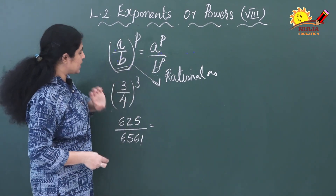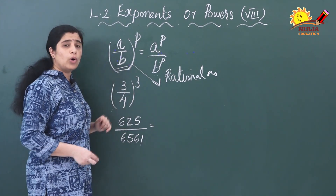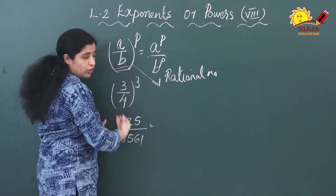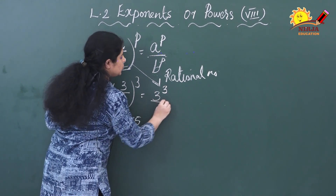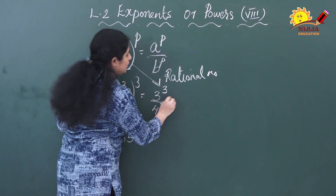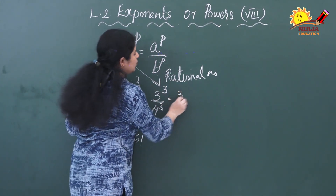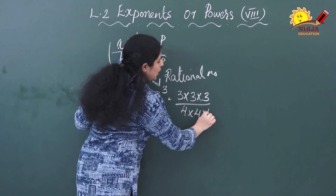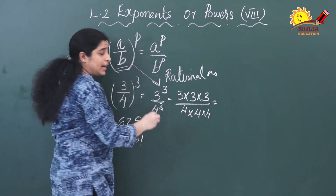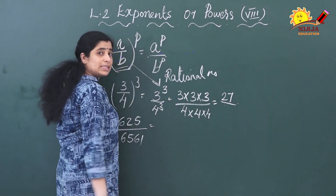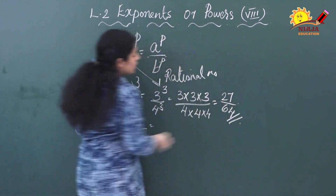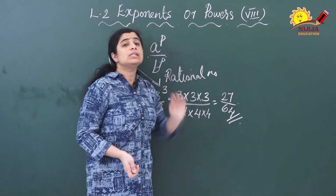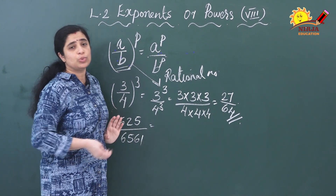I have written one example: the rational number 3 by 4 whole raised to 3. We say 'whole raised to 3' because this 3 is applicable for both 3 and 4. This can be written as 3 raised to 3 by 4 raised to 3. 3 raised to 3: 3 threes are 9, 9 threes are 27. 4 raised to 3: 4 fours are 16, 16 fours are 64. So 3 by 4 whole raised to 3 is equal to 27 by 64.